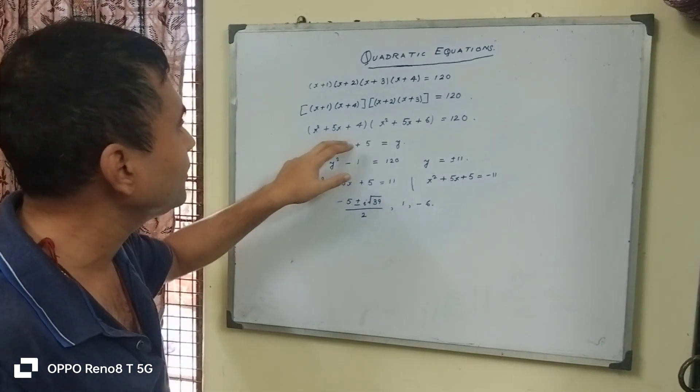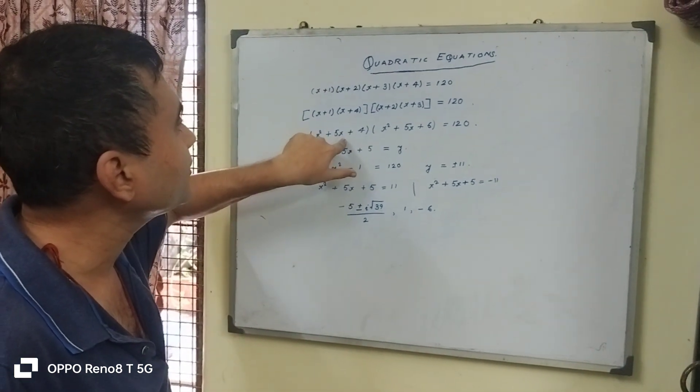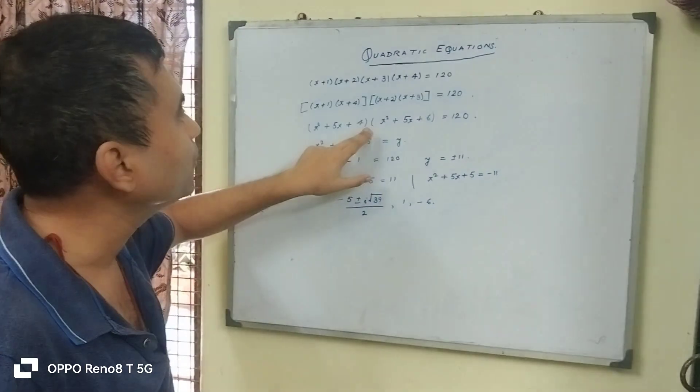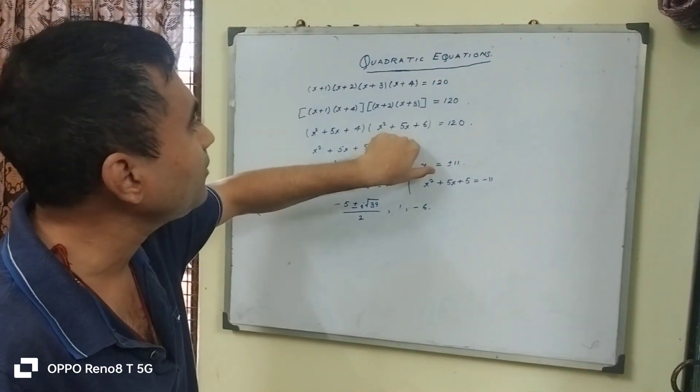What we see is we have left with x square plus 5x plus 4 and x square plus 5x plus 6.